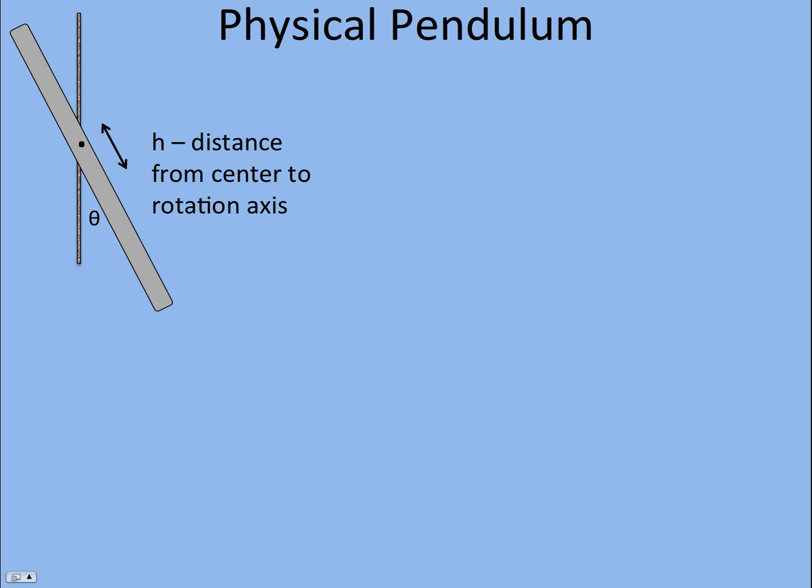Let's take a look at a physical pendulum. In this case we have a rod, but it can be anything that has a pivot point that's off its center of mass, so that there will be a torque that makes it swing back and forth after you disturb it. We define a distance h as the distance of the pivot point from the center of mass.